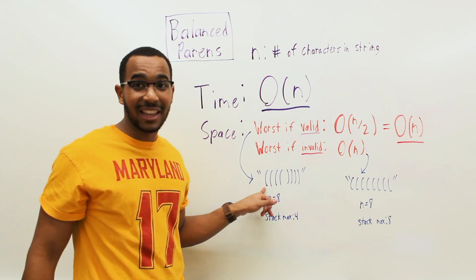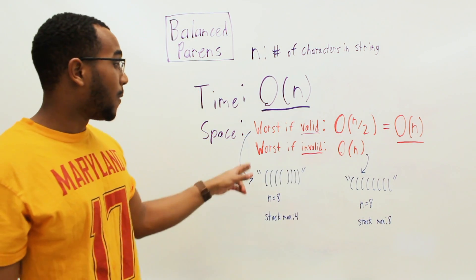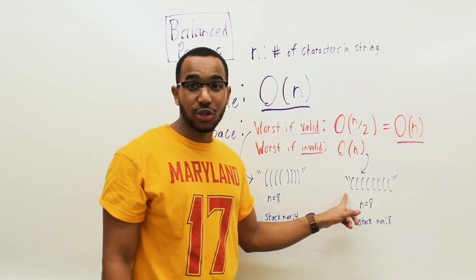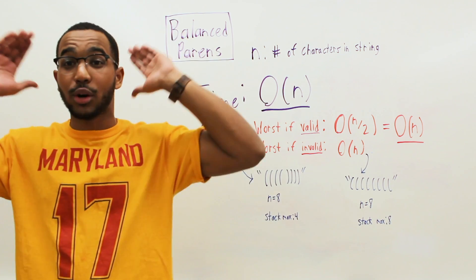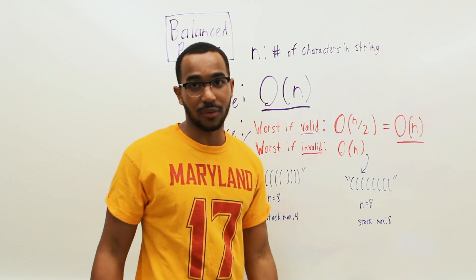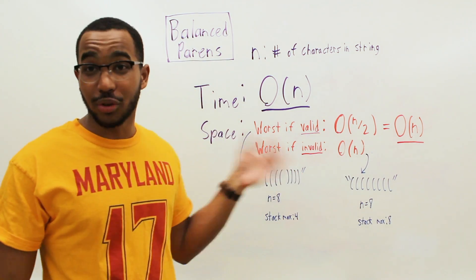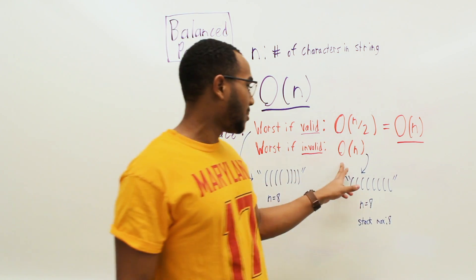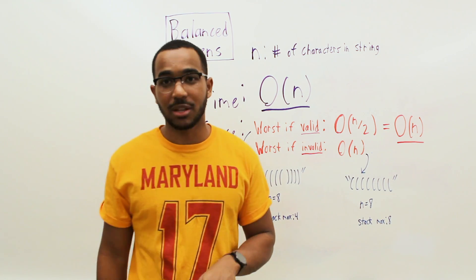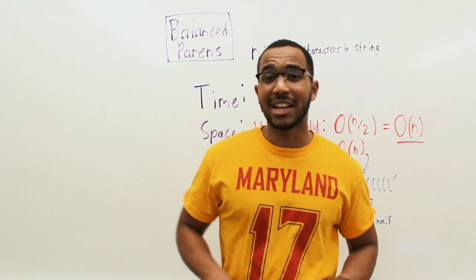The worst case is if the string is all left brackets — we push every element onto the stack, which is n elements, giving O(n) space. The last return will be false because the stack is not empty. So the worst-case space complexity is O(n) for both valid and invalid inputs. This is iterative so we don't need to worry about the call stack. Time complexity is O(n), space complexity is O(n).